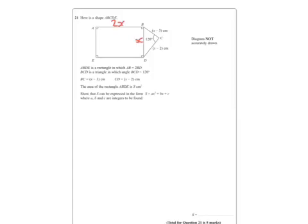BCD is a triangle in which the angle BCD is 120. BC is X minus 3, CD is X minus 2. The area of the rectangle ABDE is S. Show that S can be expressed in the form AX squared plus BX plus C.